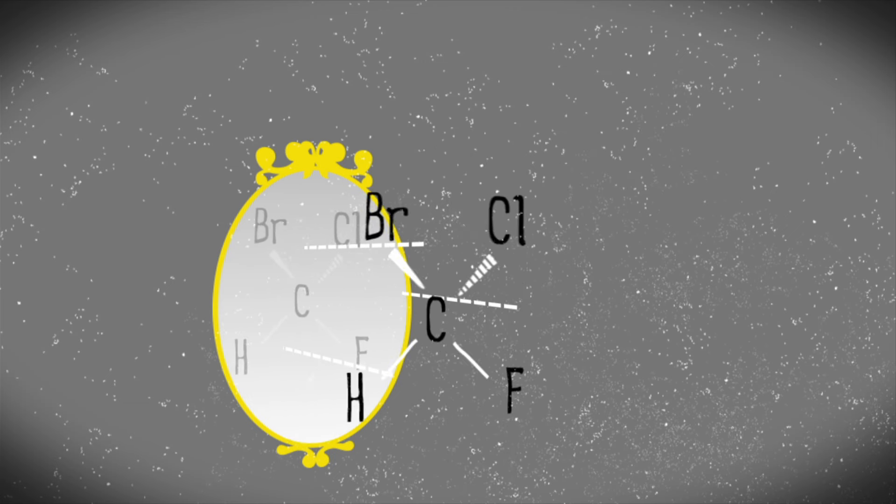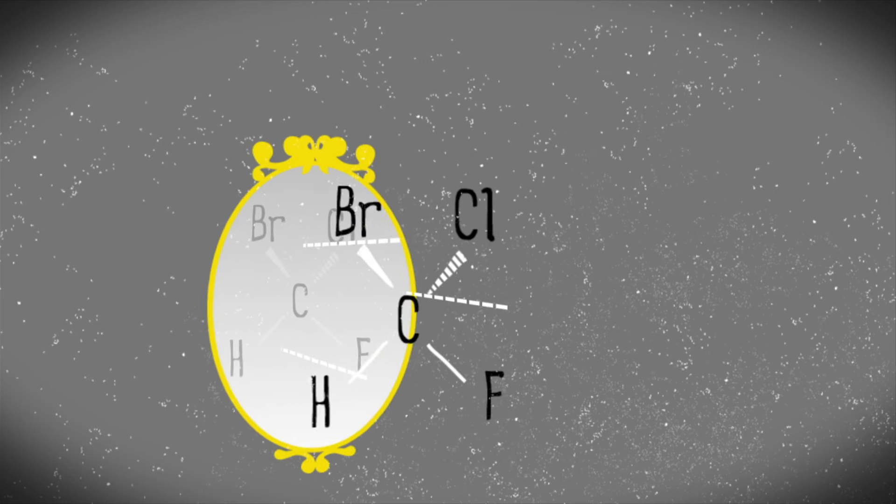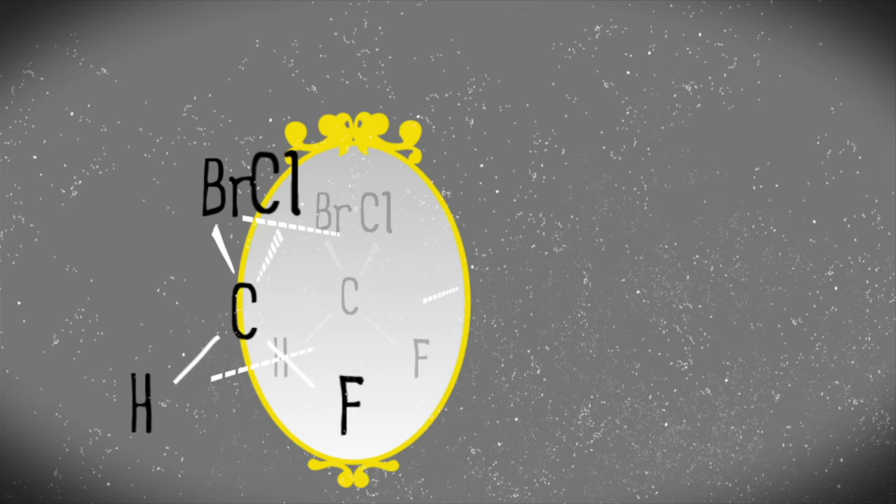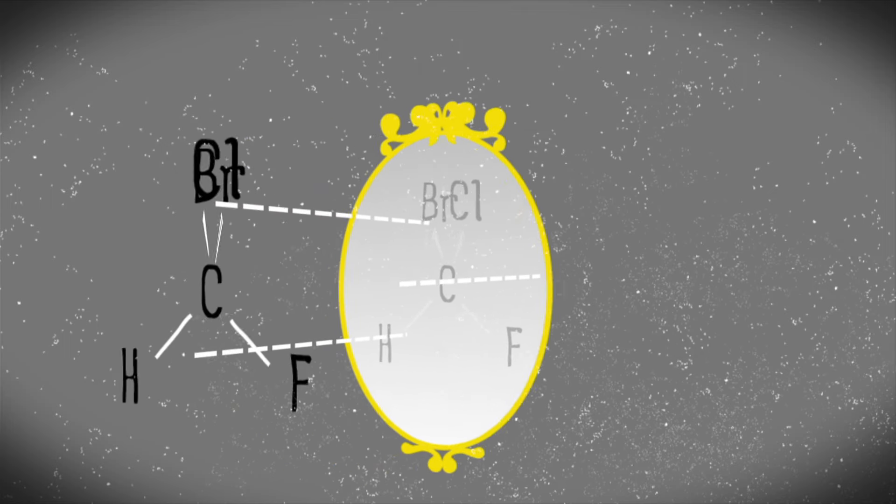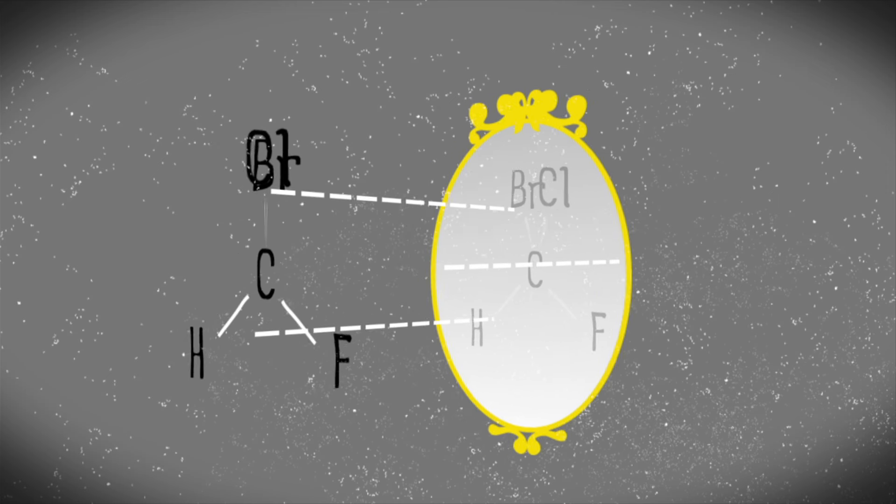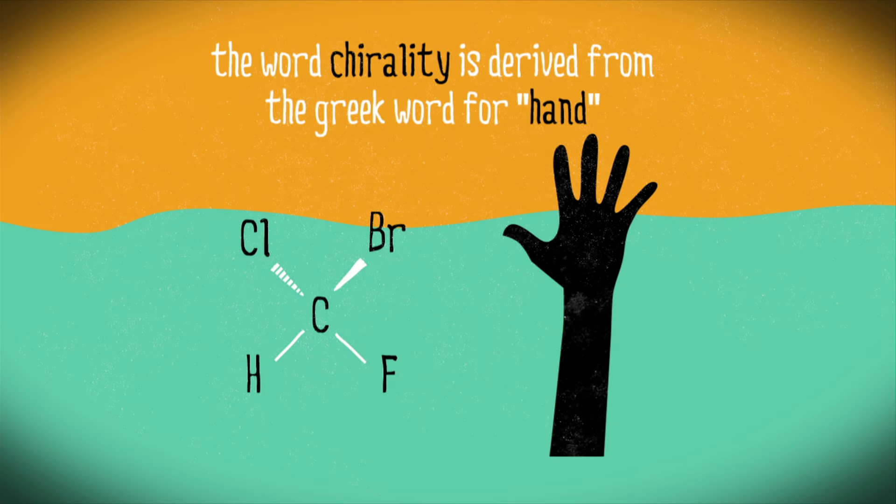The same can be said of our molecules. We can turn them so that one looks at the other as in a mirror. Your hands and our molecules possess a spatial property in common called chirality or handedness.